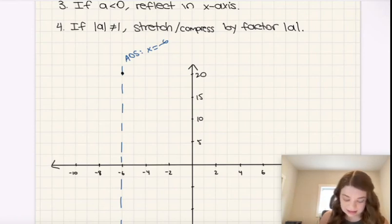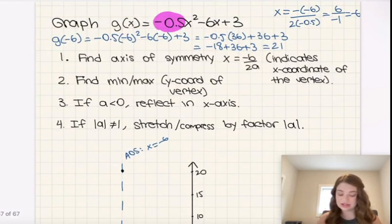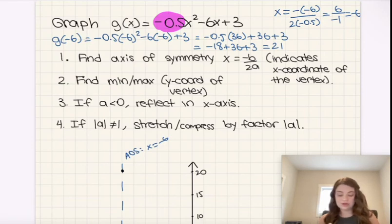The other thing is that if the absolute value of a is not 1, we have to stretch or compress by the factor. So in this case, it's not 1, it's 0.5. So we're going to multiply every number by 0.5, and we're also going to be going down instead of going up. So just as a reminder, for our parent quadratic function, the pattern is over 1, up 1, over 2, up 4. But we're going to change that pattern to down instead of up, and also multiply the y values by 0.5.